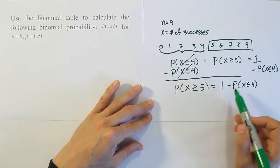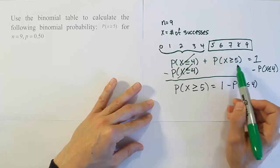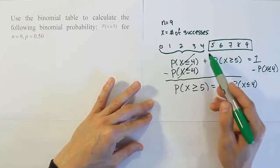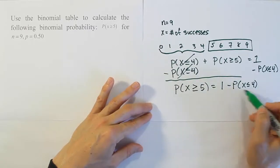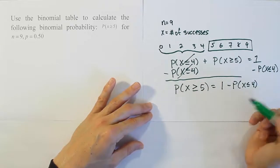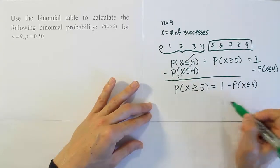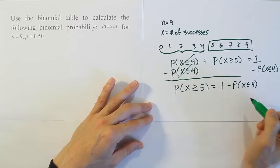So what I actually have to do is when the problem says x is greater than or equal to 5, I've got to look up 4 on the table and then subtract the answer from 1. Remember, the table only goes from the number you give it down. So it answers less than or equal to problems. It doesn't do less than, it doesn't do greater than or equal to, it doesn't do greater than.